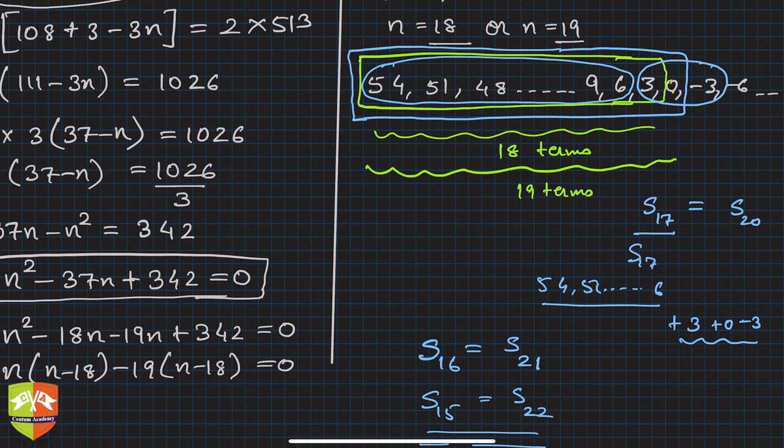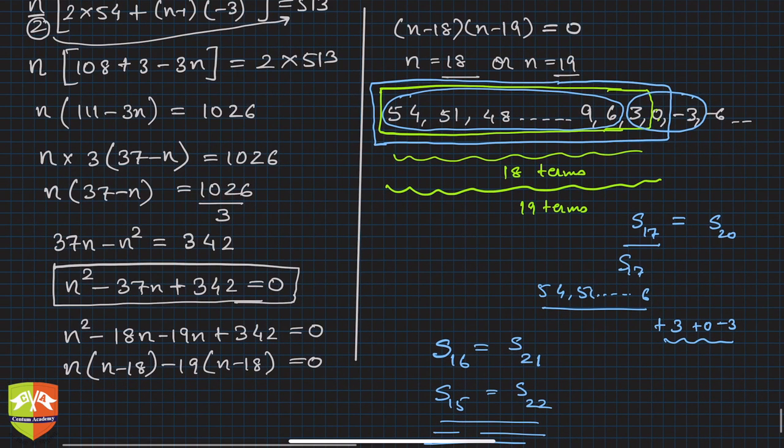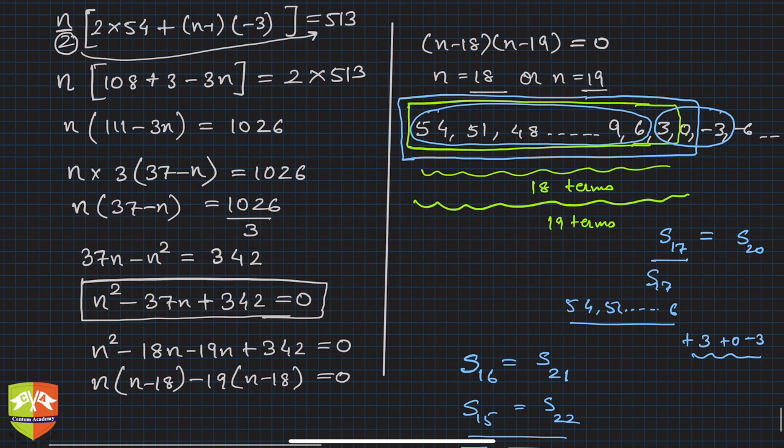Sum till 20 terms includes 3, 0, and -3, so it equals sum till 17 terms as well. Hence you will get double answers - you will get two values of n for which the sum of n terms is the same.